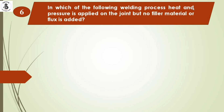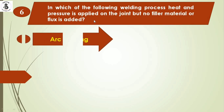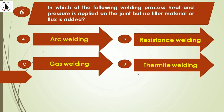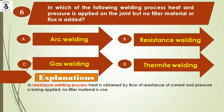Next question: in which welding process is heat and pressure applied on the joint but no filler material or flux is added? Option A: arc welding. Option B: resistance welding. Option C: gas welding. Option D: thermite welding. In resistance welding, heat is generated by the resistance to electron flow, and pressure is applied to form the joint — no filler material is required. So the right answer is option B.